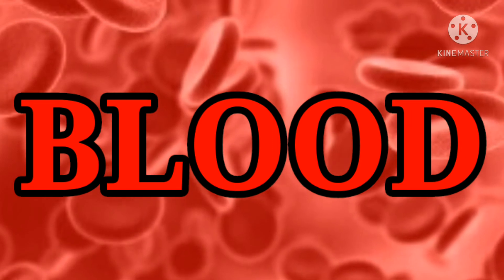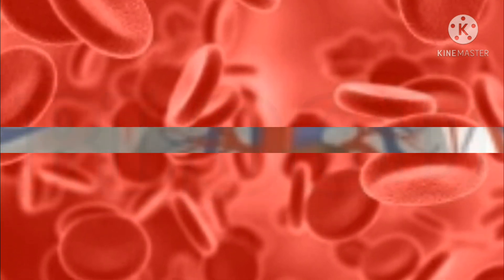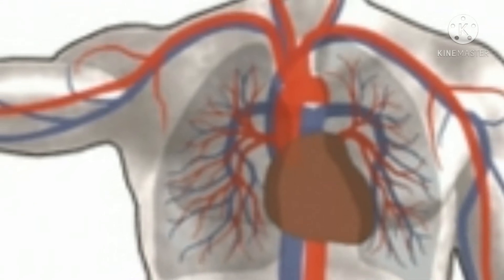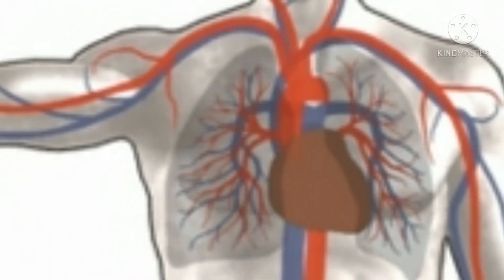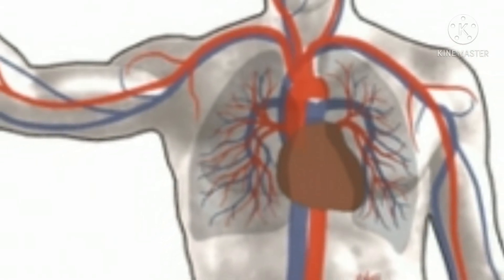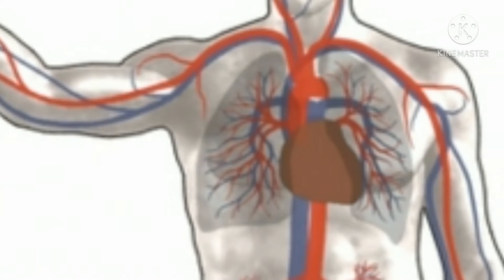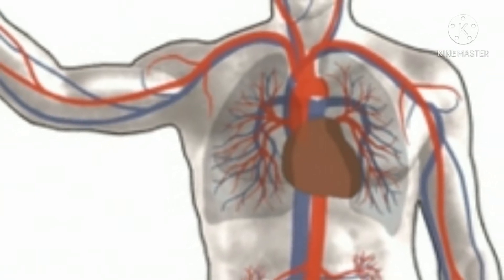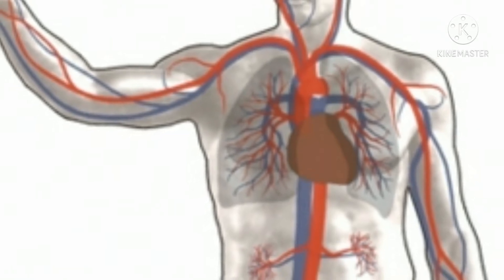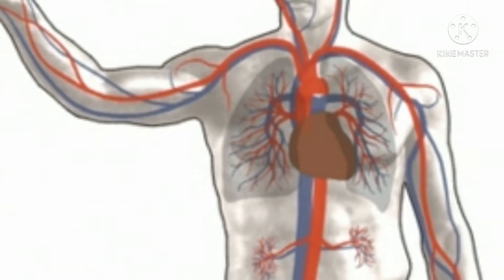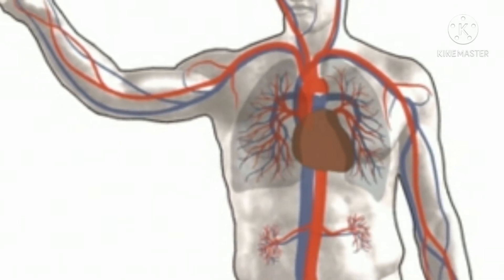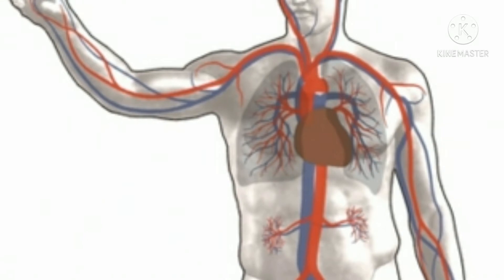Blood is a constantly circulating specialized body fluid in humans and other animals. Blood takes oxygen from the lungs to the cells of the body, and it takes carbon dioxide from the body's cells to the lungs where it is breathed out. Blood also supplies other essential substances around the body and transports metabolic waste products away from cells.